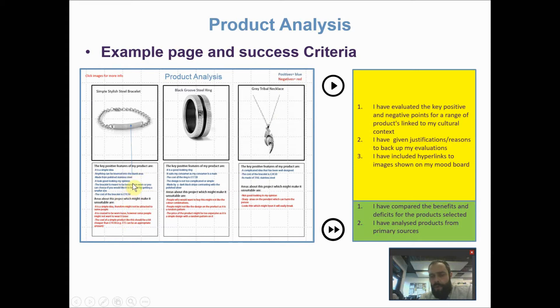But really how do we evaluate? What we need to work out before we evaluate is what we're going to evaluate on. I've talked about this in the previous video but we talked about ACCESS FM. So ACCESS FM is that list of points: aesthetics, cost, consumer, environment, safety, size, function, materials, and perhaps ergonomics as well if we're talking about function.